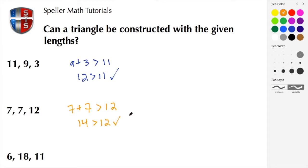Here we have 14 which is greater than 12, so again the lengths of 7, 7, and 12 can be configured into a triangle.